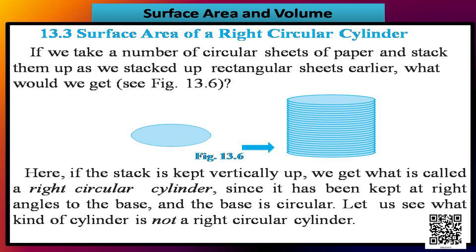Let us now discuss the surface area of a right circular cylinder. If we take a number of circular sheets of paper and stack them up vertically, we get what is called a right circular cylinder, since it is kept at right angles to the base and the base is circular.